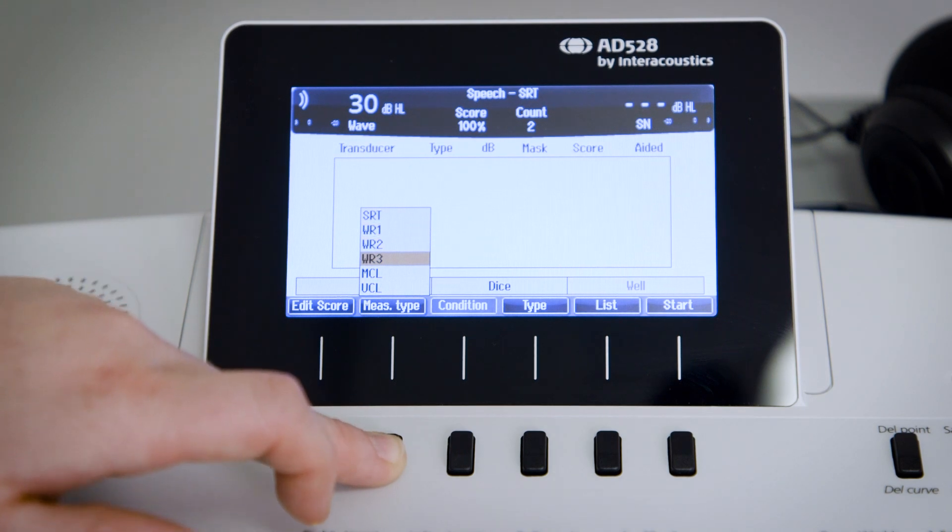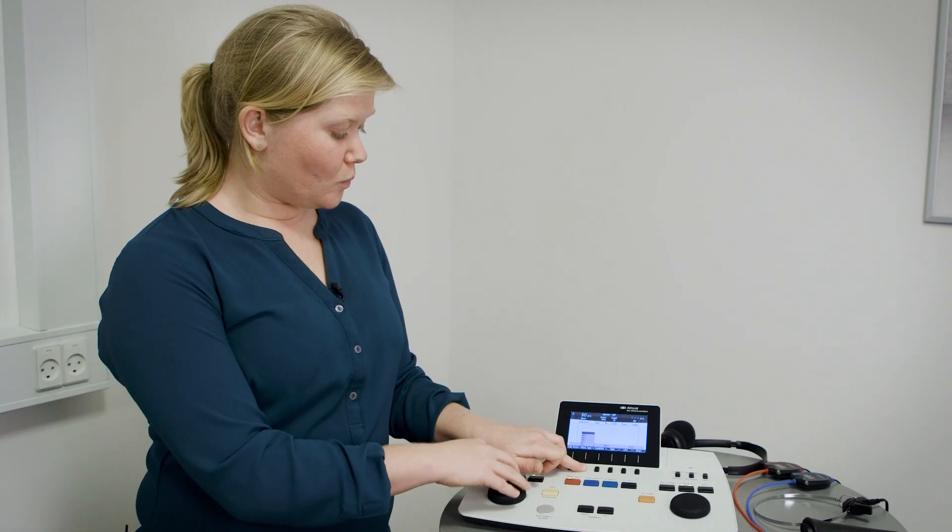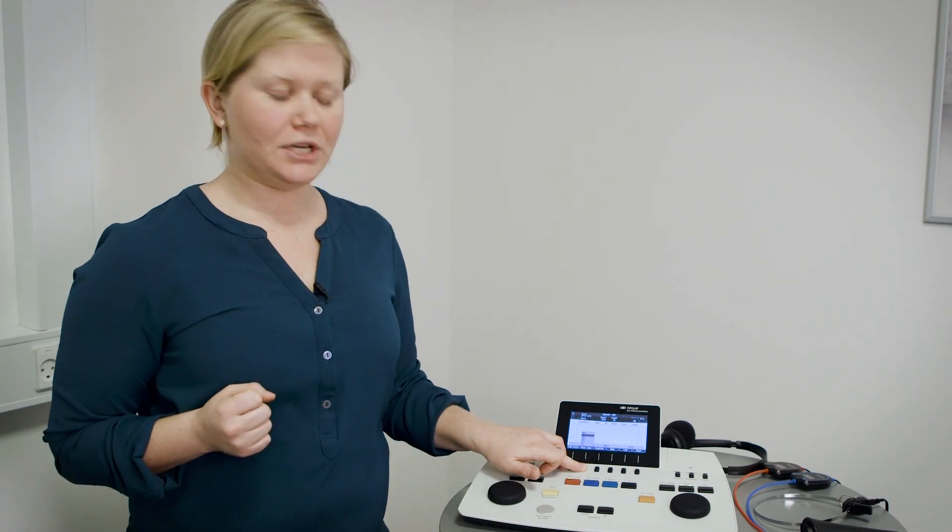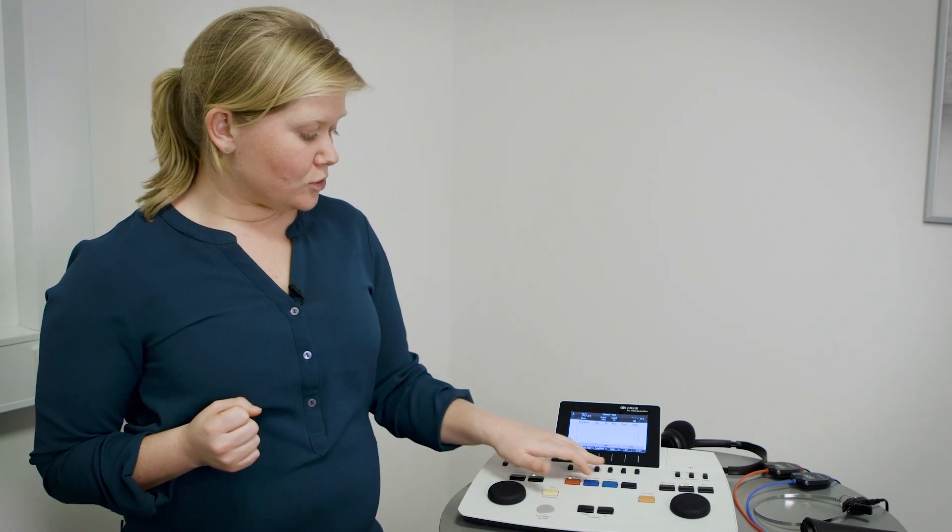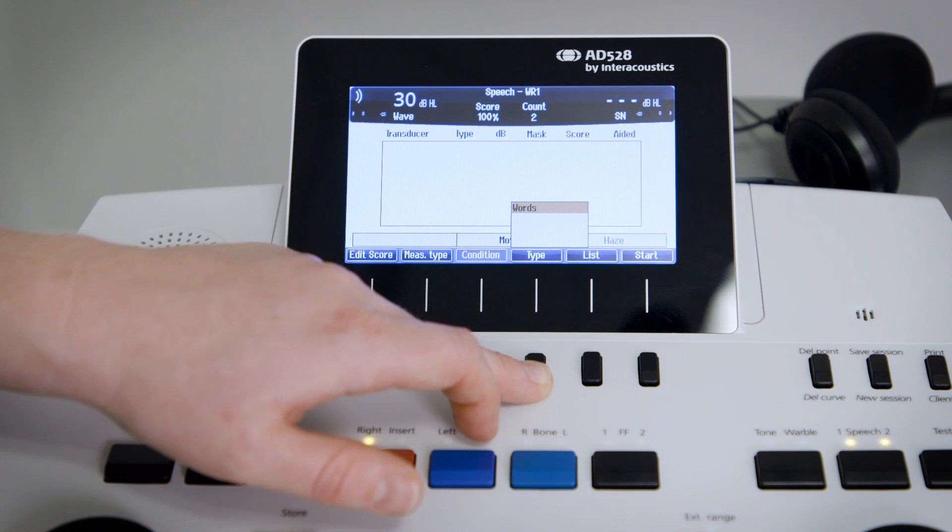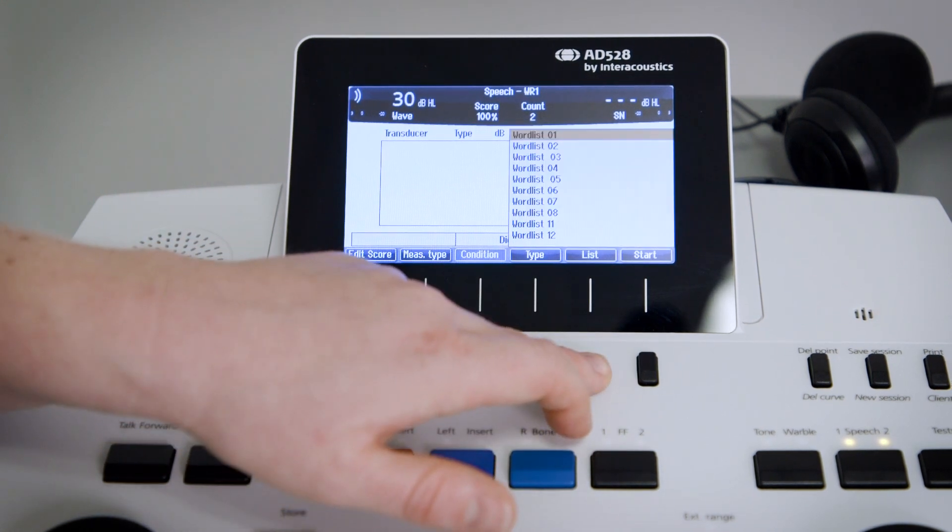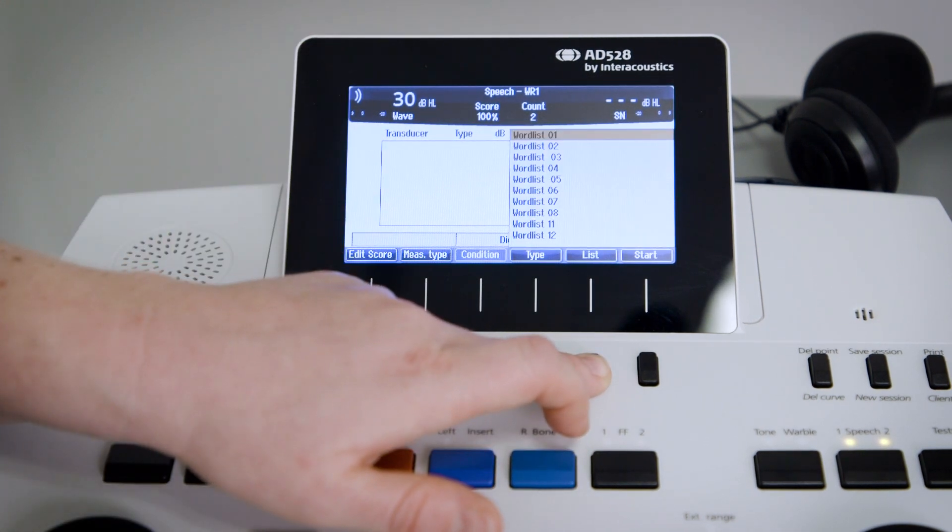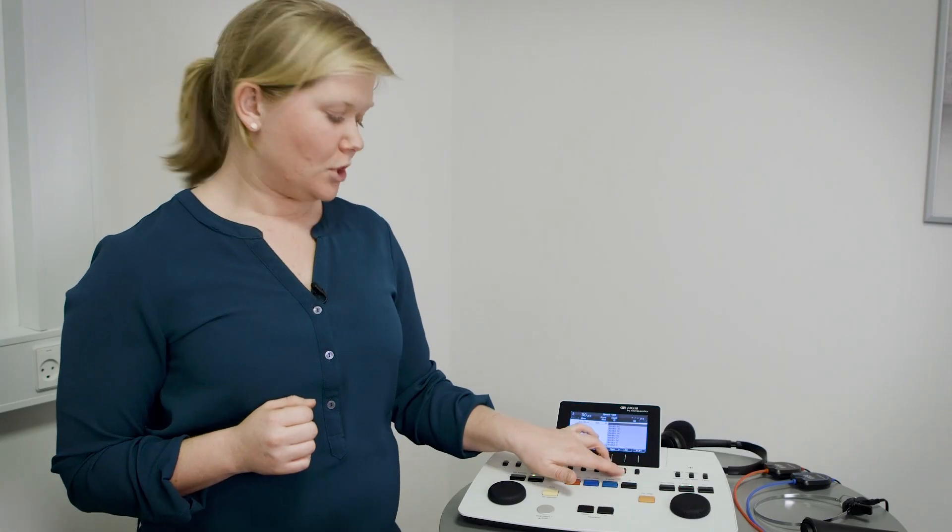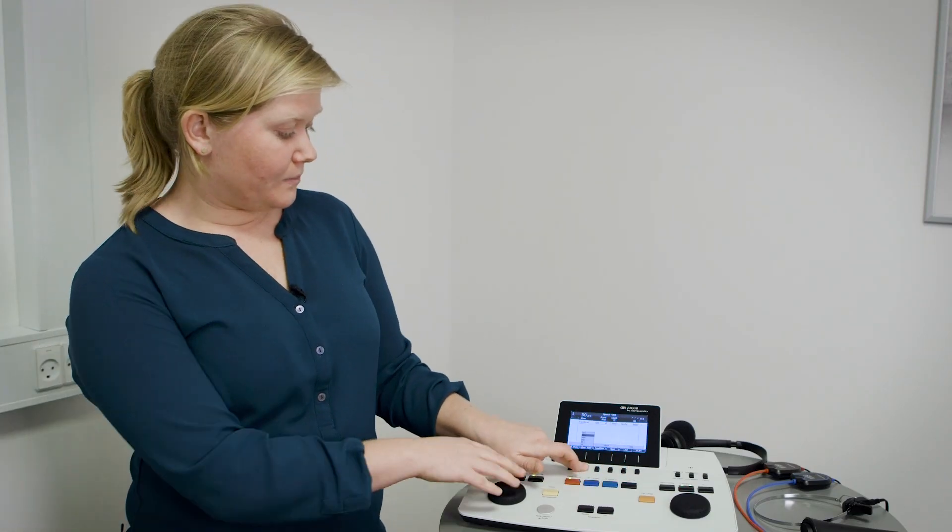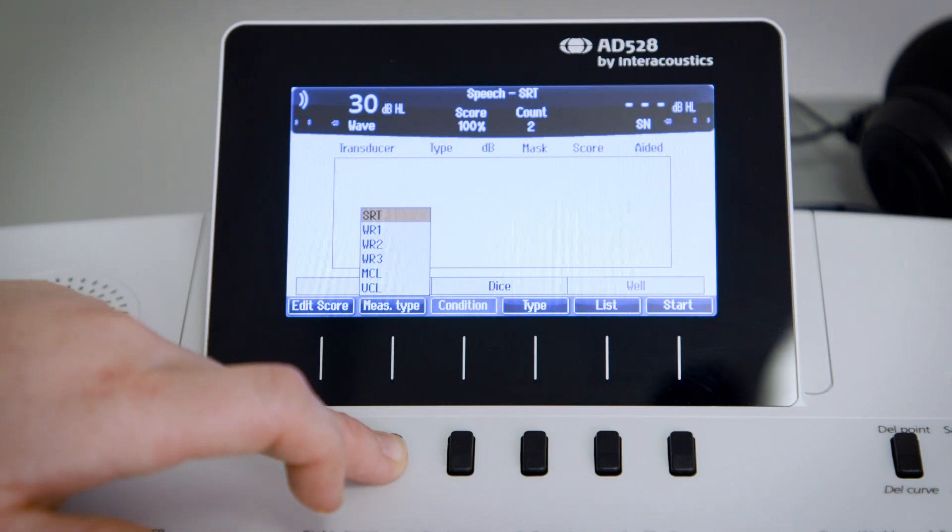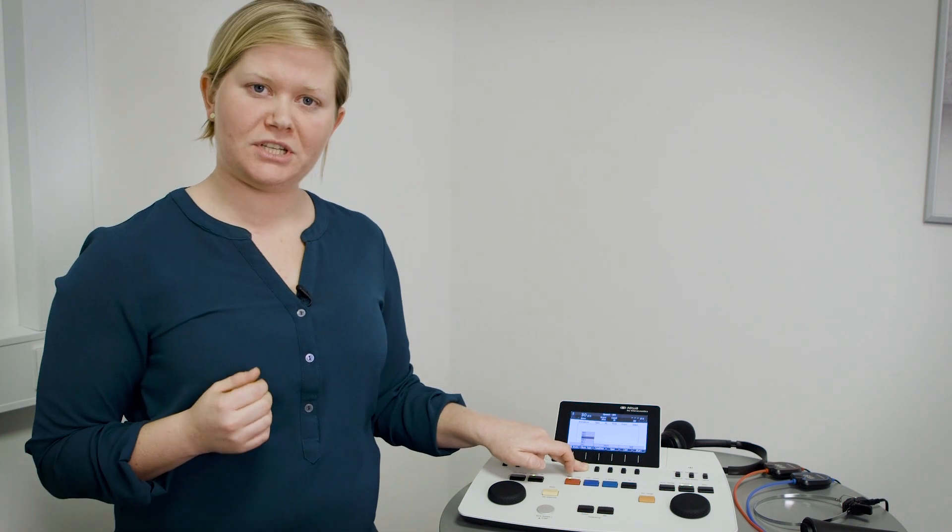The reason we have three different ones is that when you have set the word recognition one, that is linked to a certain type of material, in this matter words, that is then linked to the list that goes with that particular material. So when you change from SRT to VR1 to VR2, it automatically changes the type and the list of material accordingly.